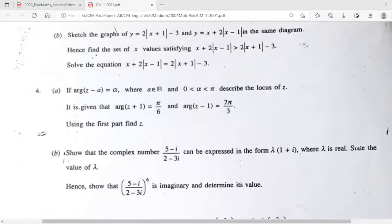Now you can see the problem properly. If you take question number four, part A, where A belongs to R, alpha is an angle between 0 and pi. Describe the locus of z.